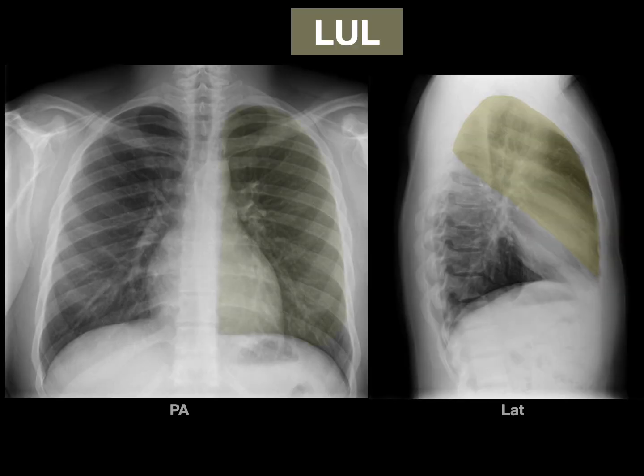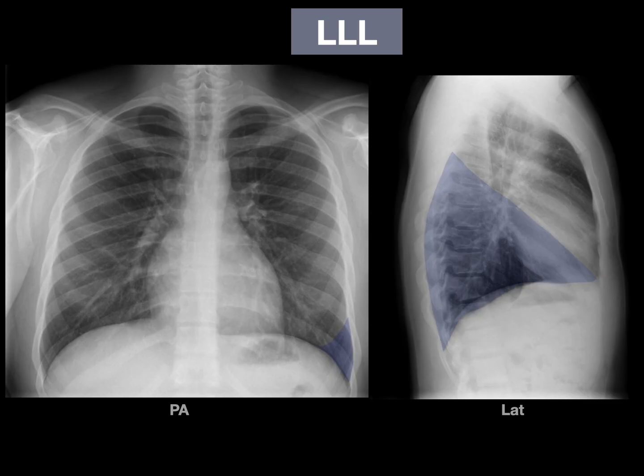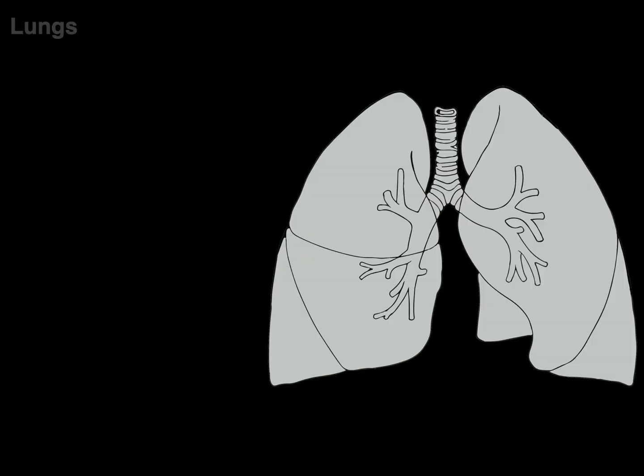On the chest X-ray of the left lung, there's the left upper lobe, which is predominantly on the superior and anterior surface of the lung field. The left lower lobe is primarily on the back.